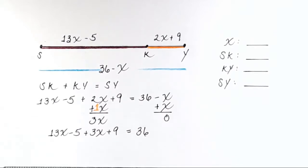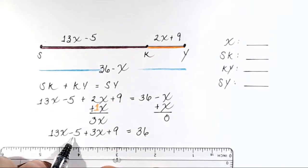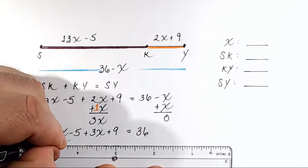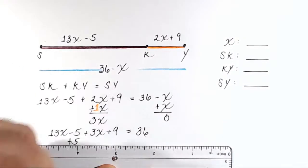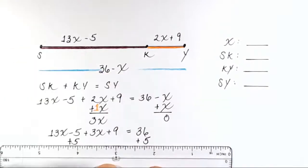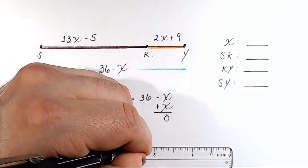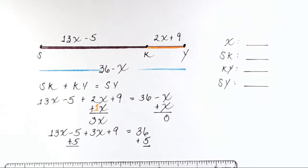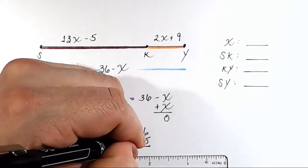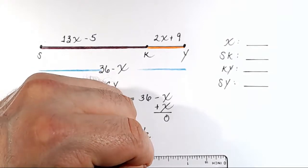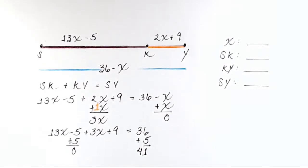13X minus 5 plus 3X plus 9 equals 36. So now we've got to start getting rid of the negative 5 and the 9. If I want to get rid of this minus 5, I have to add 5. Do the opposite. We'll add 5 to both sides. So negative 5 plus 5 is just 0, and 36 plus 5 is 41.